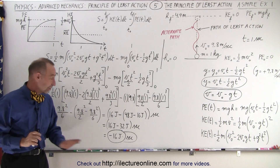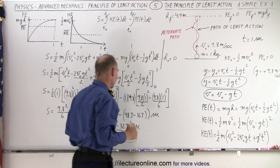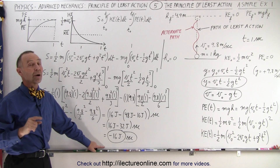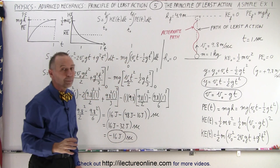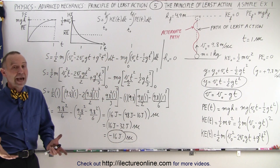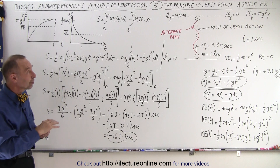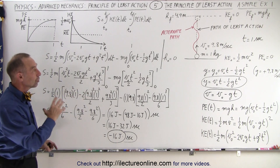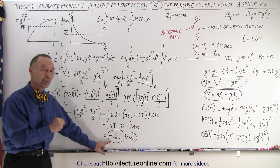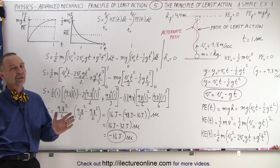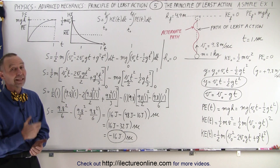The minimum action with the path of least action is equal to minus 16 joule·seconds. We'll show later that if we take any other path, the result of that integral will be greater than minus 16, and therefore that will not be the path taken by the object. The concept is: when you do the integral on the path of least action, you get the smallest value; any other path gives a bigger number. Examples of that will be shown in the next several videos. And that is how it's done.